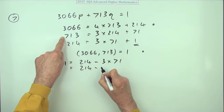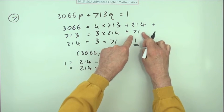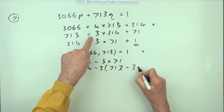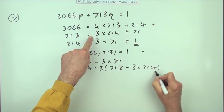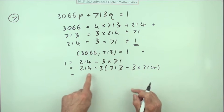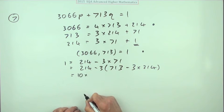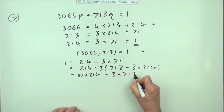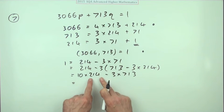So I've got 214 minus 3 times, now this 71 can be replaced by 713 minus 3 lots of 214. And this line can be tidied up because I've only got 214s and 713s. So it says I've got plus 9 of them, so plus that one means I've got 10 lots of 214 minus 3 lots of 713.